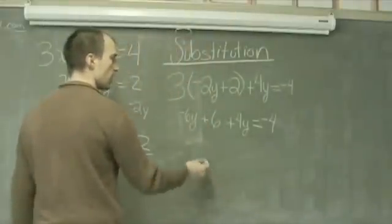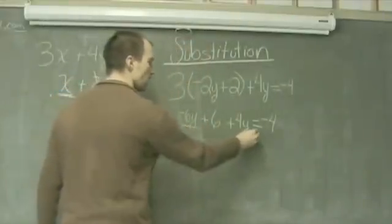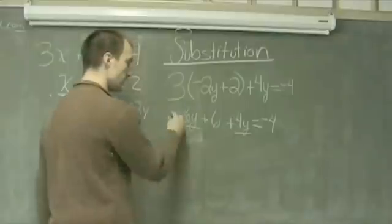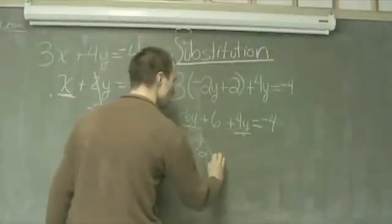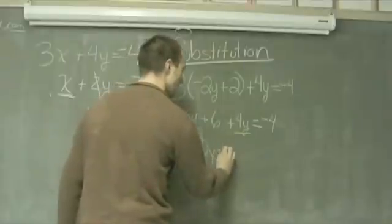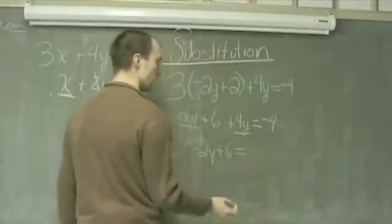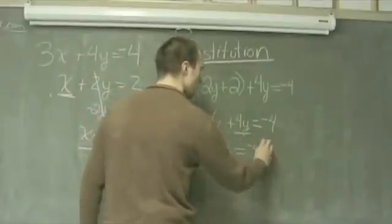Solving here, I combine negative 6y and positive 4y, which gives me negative 2y plus 6 equals negative 4.